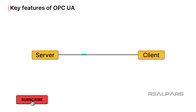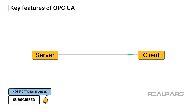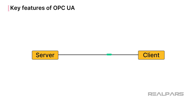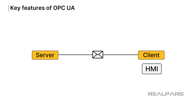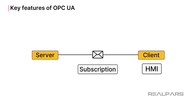OPC UA is a client-server based application. The OPC UA server provides access to its data by exposing its data objects to an OPC UA client, such as an HMI application. The OPC UA interface is defined through configuration. An OPC UA application on the client subscribes to the data objects in the OPC UA server. These subscriptions are comprised of one or more data links to objects in the server, that are used to request data from the server.